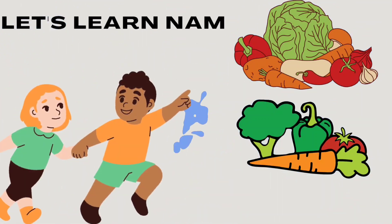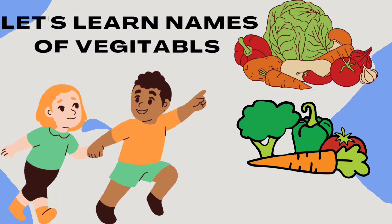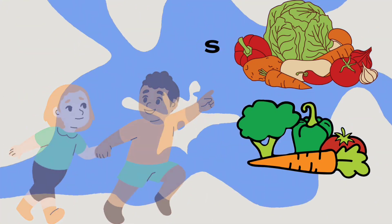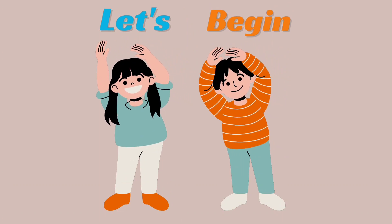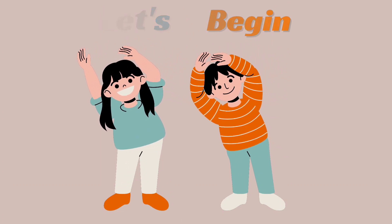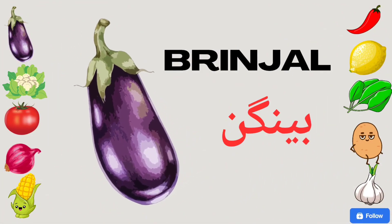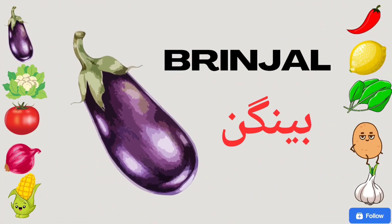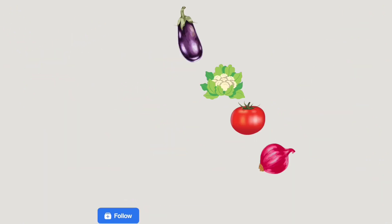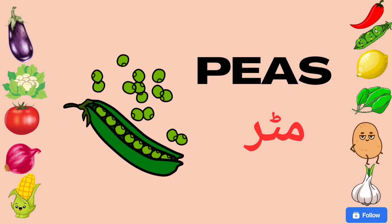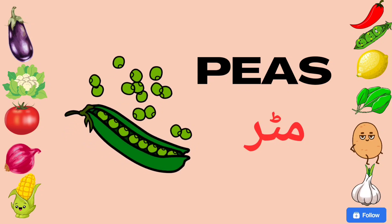Let's learn names of vegetables. Let's begin. Brinjal, dangan. Peas, matar.